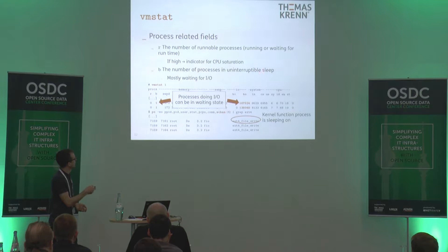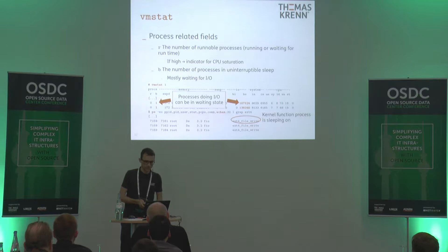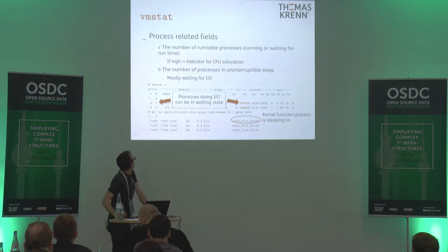In the second column we have the number of processes in an uninterruptible sleep — mostly this is time waiting for IO. We can see, for example, when looking at kernel functions using the PS command, there are always processes waiting for file writes, which is expected but simply needs some time.